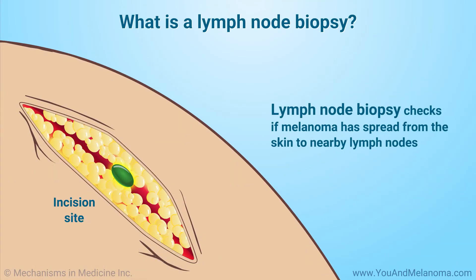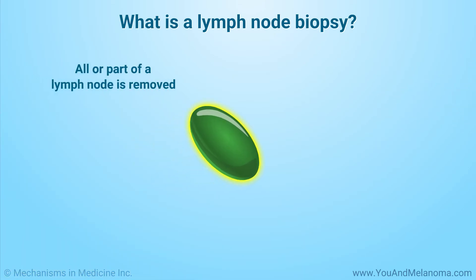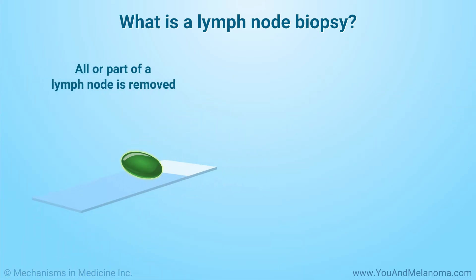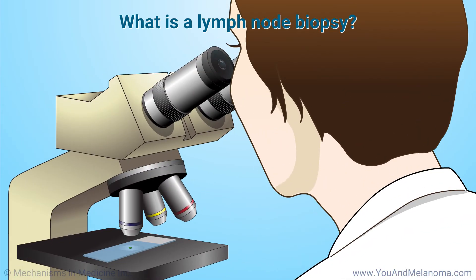A lymph node biopsy is done to find out if melanoma has spread from the skin to nearby lymph nodes. All or part of a lymph node is removed and sent to a lab to be looked at under a microscope.